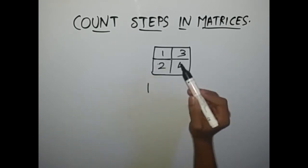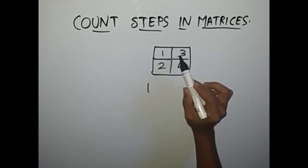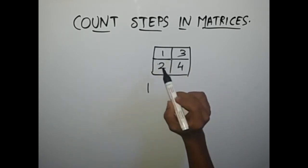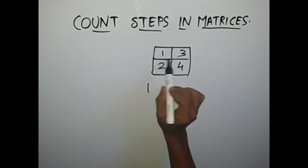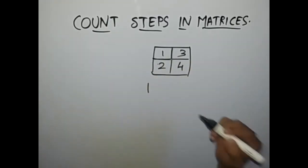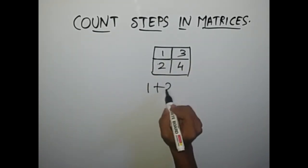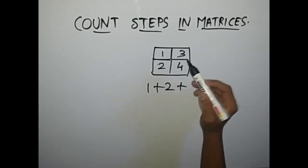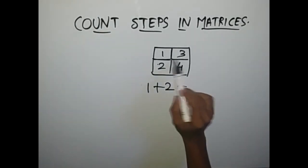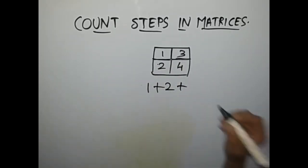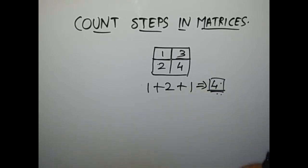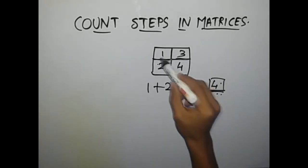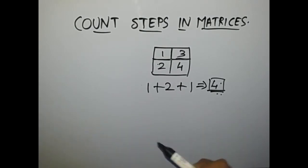Going from 2 to 3, we cannot directly go because they don't share an adjacent edge. So we need to go from 2 to 1, then from 1 to 3, because they both share an adjacent edge. So the total number of moves is 2. We have to find the total number of moves required to traverse from the first element to the last element through all intermediate elements.